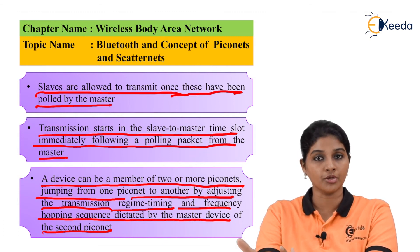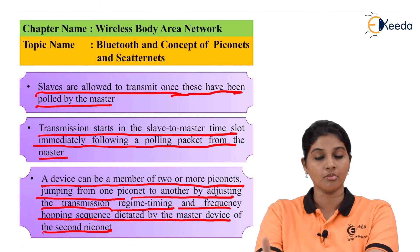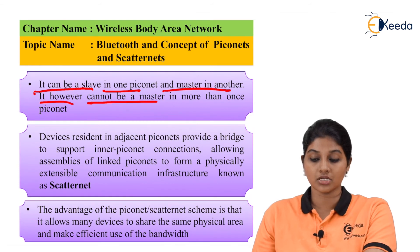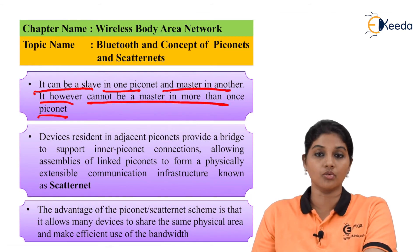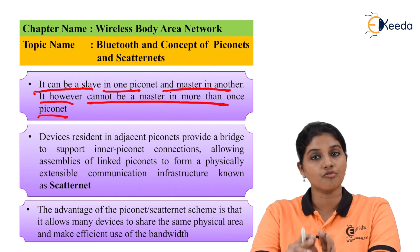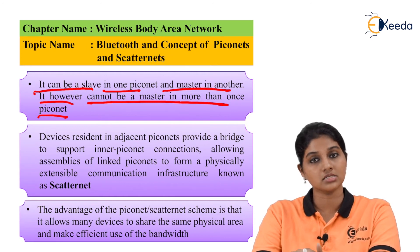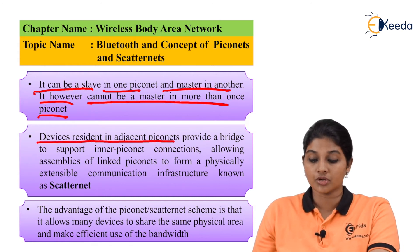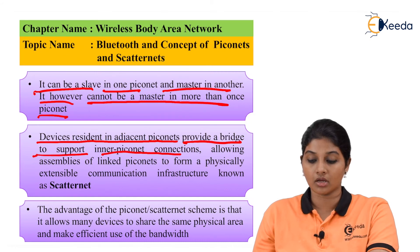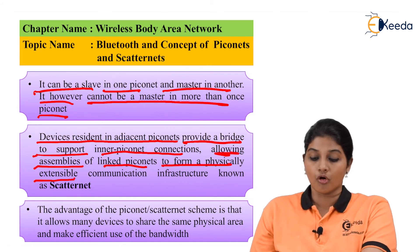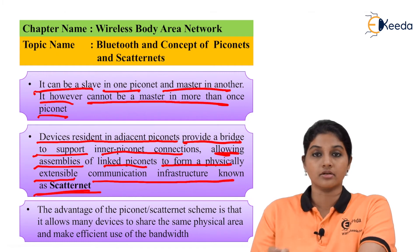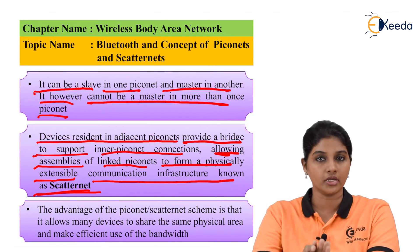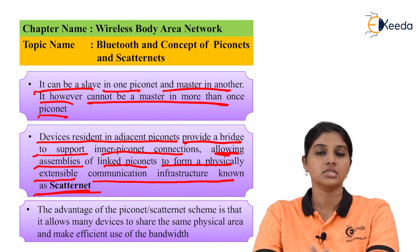A device can act as a slave in one Piconet and as a master in another. However, it cannot be master in more than one Piconet. Devices residing in adjacent Piconets provide a bridge to support inter-Piconet connections, allowing assembly of linked Piconets to form a physical communication infrastructure called a Scatternet. In simple terms, when two or more Piconets get connected and communicate with each other, they form a Scatternet.